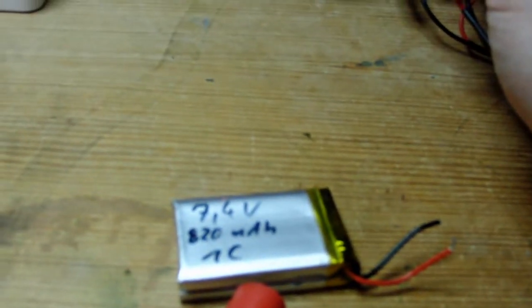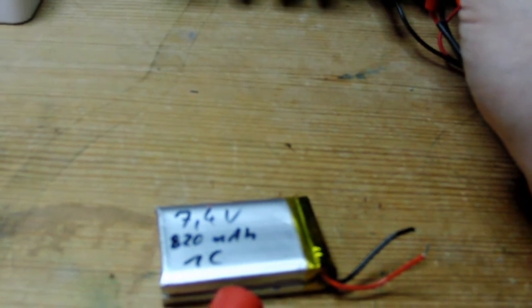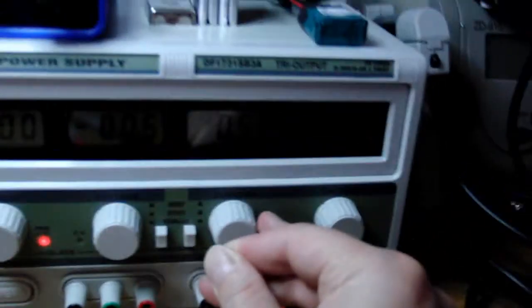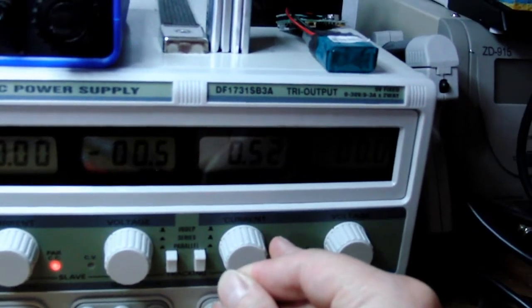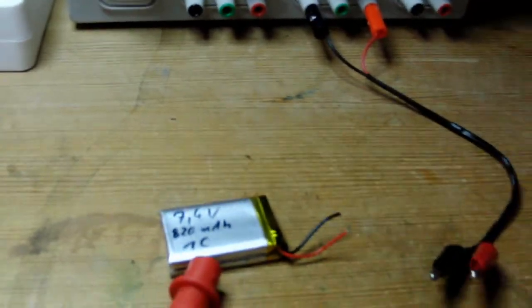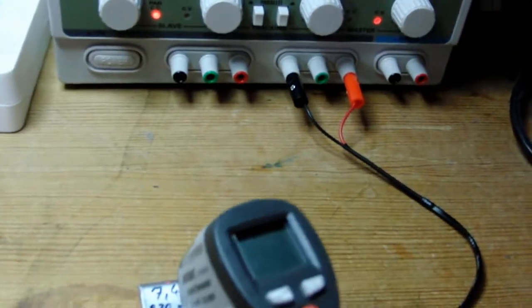This cell is a 1C charge capable cell. I stay under that normally. So I'll use something like 500mA for charging it. Make sure it's cooled down after this charging so you won't damage the cell.